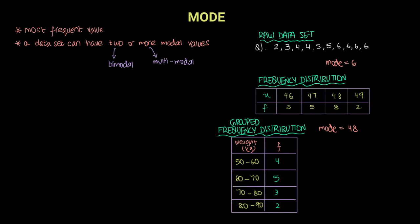In this case, the class 60 to 70 kilograms has the highest frequency and we call it the modal class.